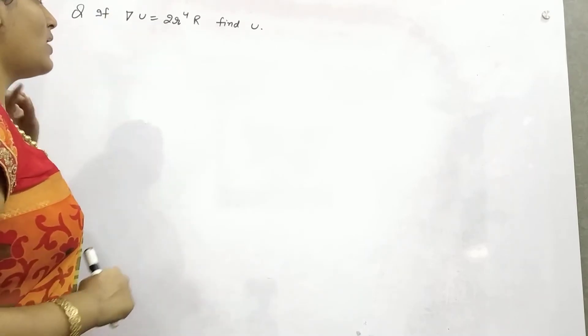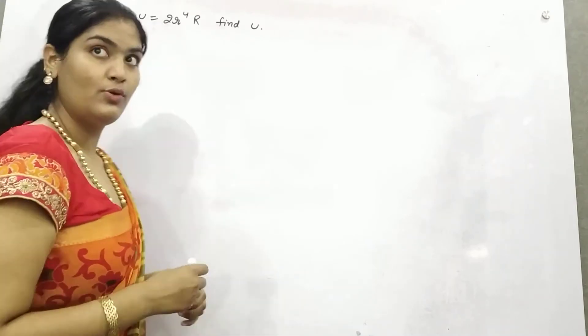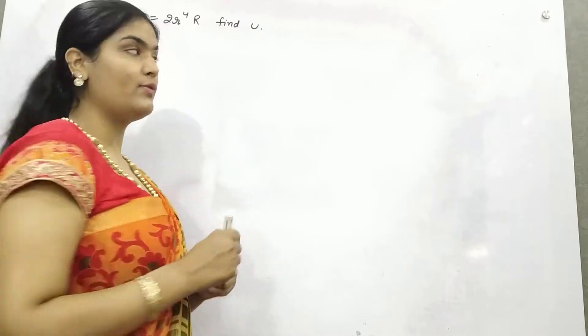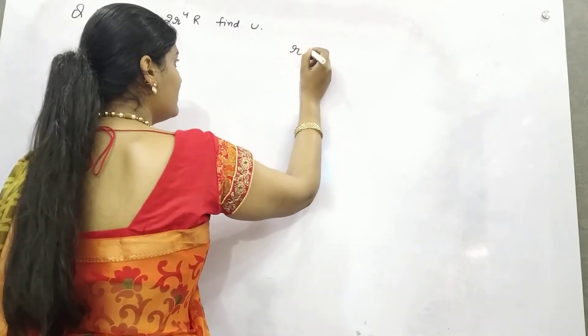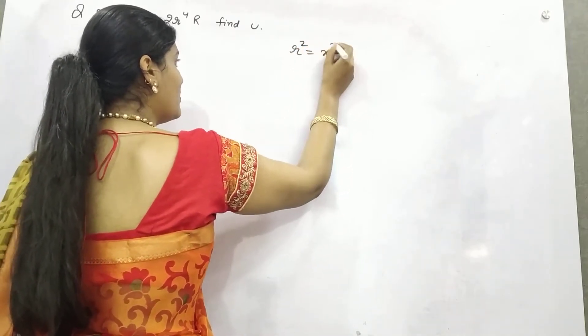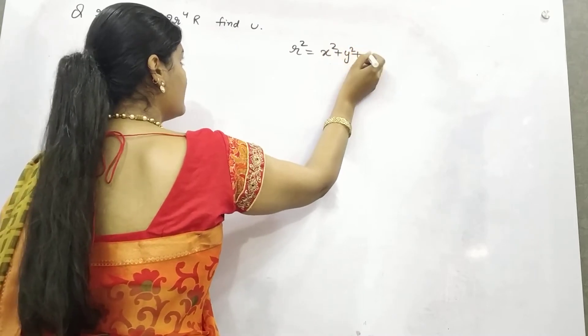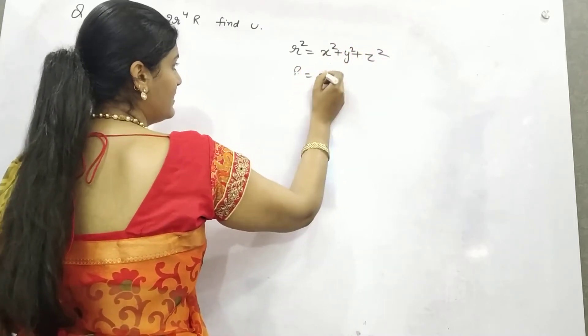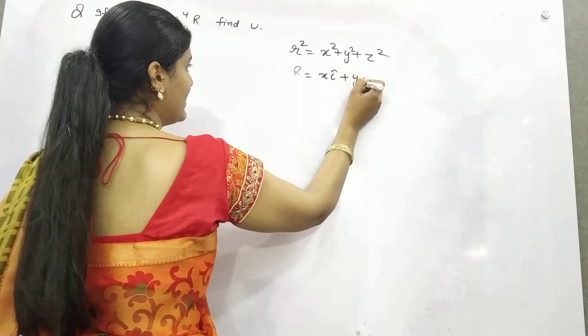Let's begin with an example. The gradient is given to you which is 2r^4·r, and you know very well from previous videos that your radius, the equation of r squared is this, and your r vector is x·i + y·j + z·k.